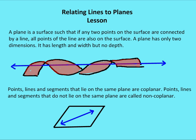A plane is a surface such that if any two points on the surface are connected by a line, all the points of the line are also on the surface of the plane. Let's take the example below in red — a line that runs through this wavy diagram. It runs up and down, and I have a line that runs through several points, but not the entire wavy figure. So this wavy red figure is not a plane, because there are areas where part of the line is not on the surface.